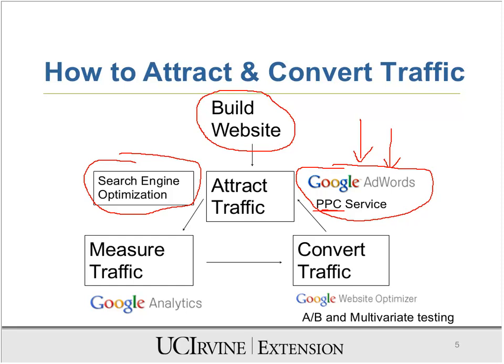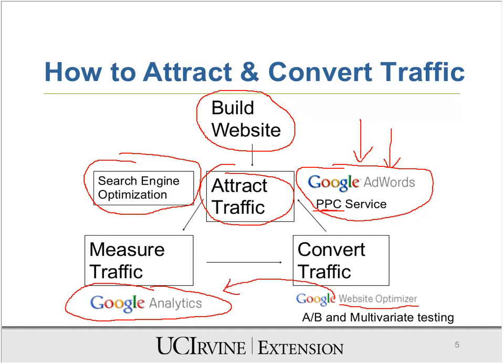Once you start attracting traffic to your website, you also have to measure it. Google provides another service called Google Analytics for measuring traffic. Then you have to convert that traffic — sell whatever you're selling or provide information. For that, Google provides a service called Google Website Optimizer, though its features have since been merged into Google Analytics. So you have to attract traffic, measure it, and convert it — and this cycle just goes on. If you want to be successful, you have to focus on those three things.